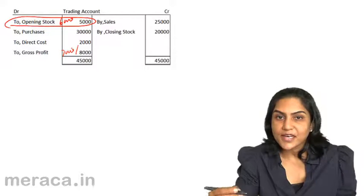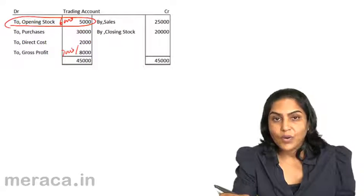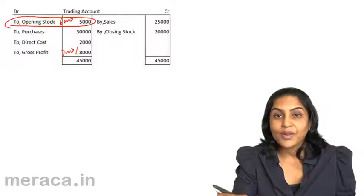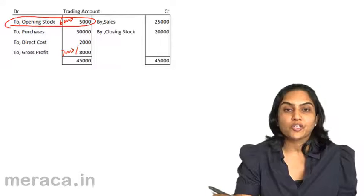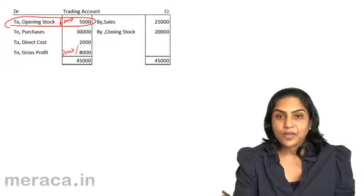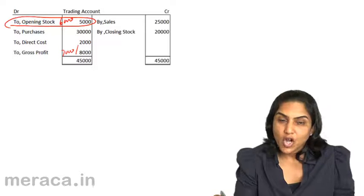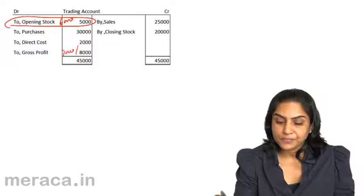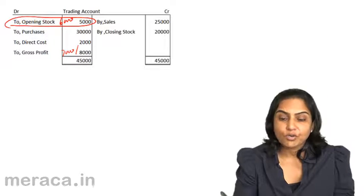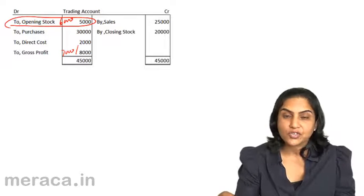Thus, an increase in opening stock decreases the gross profit, while a decrease in opening stock will increase the amount of gross profit. This is because opening stock is a part of the cost of goods, whereas closing stock is actually a reduction in the cost of goods.